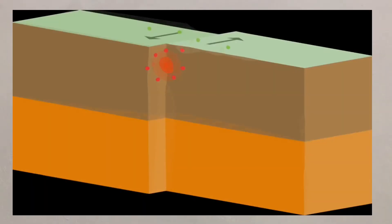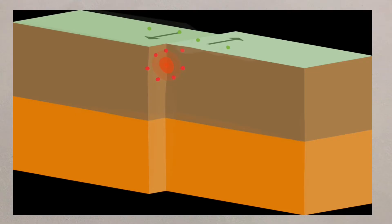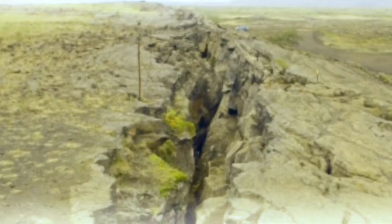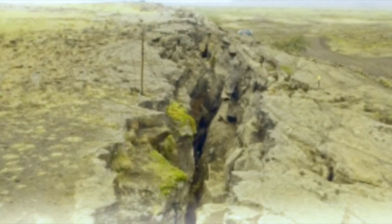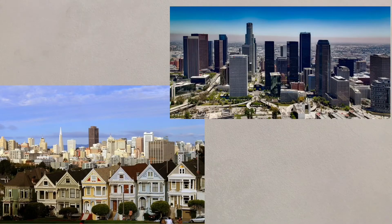Conservative margins are where the plates seem to move past each other, and a great example of this is the San Andreas Fault in California. Tremendous pressure can build up at these margins as the ground becomes stuck between the two plates. As the pressure is suddenly released, the ground can slip and shake, creating large and destructive earthquakes. San Francisco and Los Angeles have both suffered in the past due to this margin.